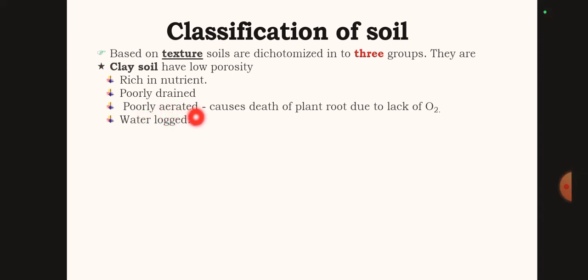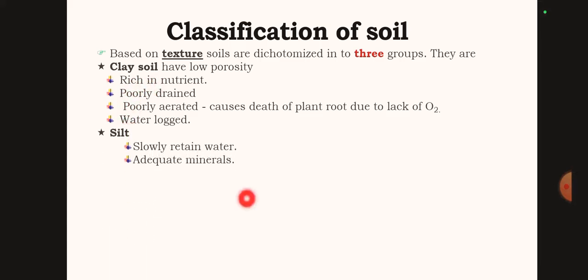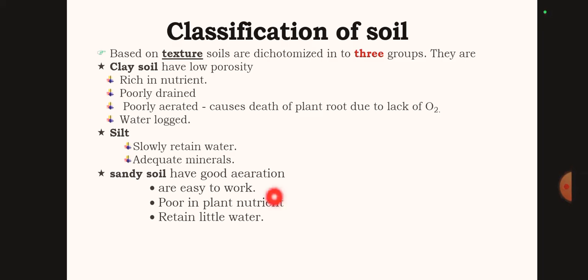Clay soil is poorly aerated. The second soil type is called silt soil. Silt soil slowly retains water.